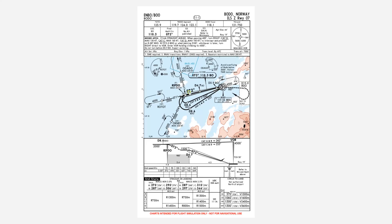The F-16 is equipped with a fancy little thing called command steering. It is a steering donut which appears in the heads-up display, and all we need to do is put our flight path vector on top of it and follow it — it's going to guide the aircraft along the localizer and glide slope. Let's jump right in and take a look.